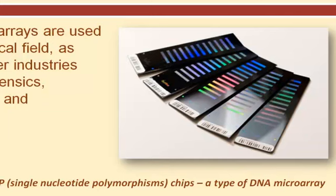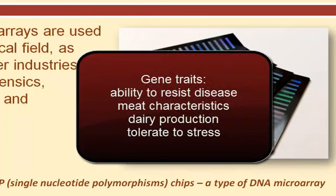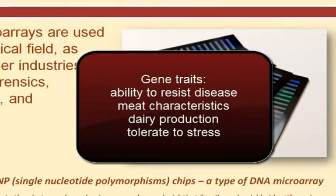These particular arrays are used to identify the bovine genome, or the genes of a cow. By mapping the cow's genome, researchers can identify and monitor the genes that determine certain preferred traits, such as a cow's ability to resist disease, the characteristics of its meat, its ability to produce milk, and its ability to tolerate stress.